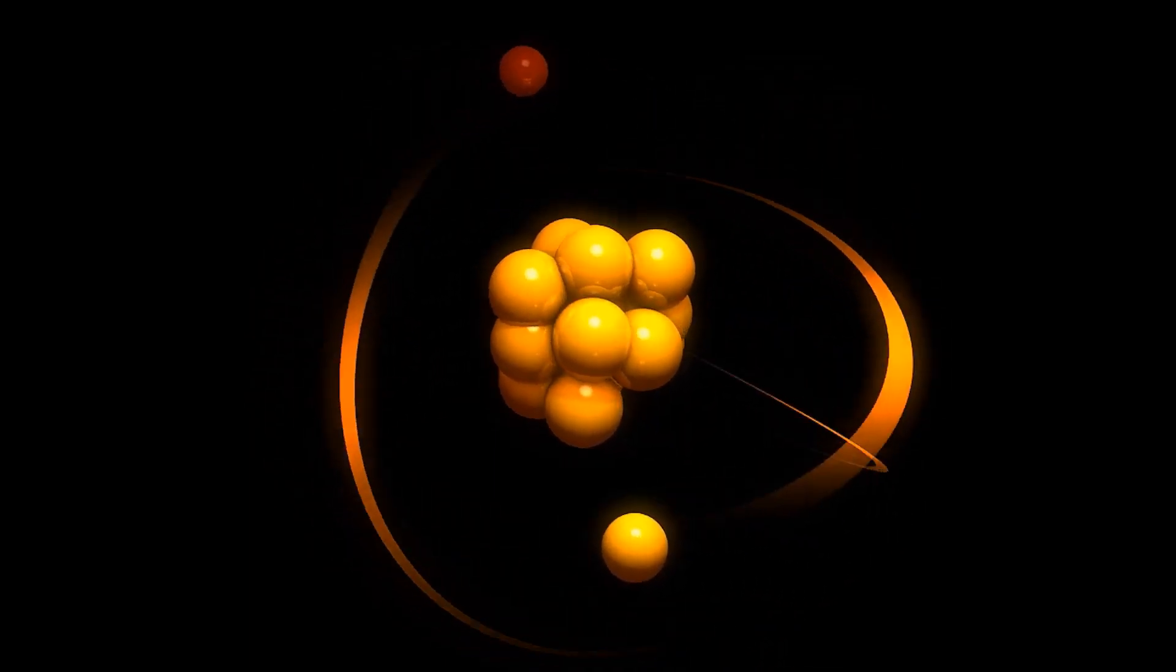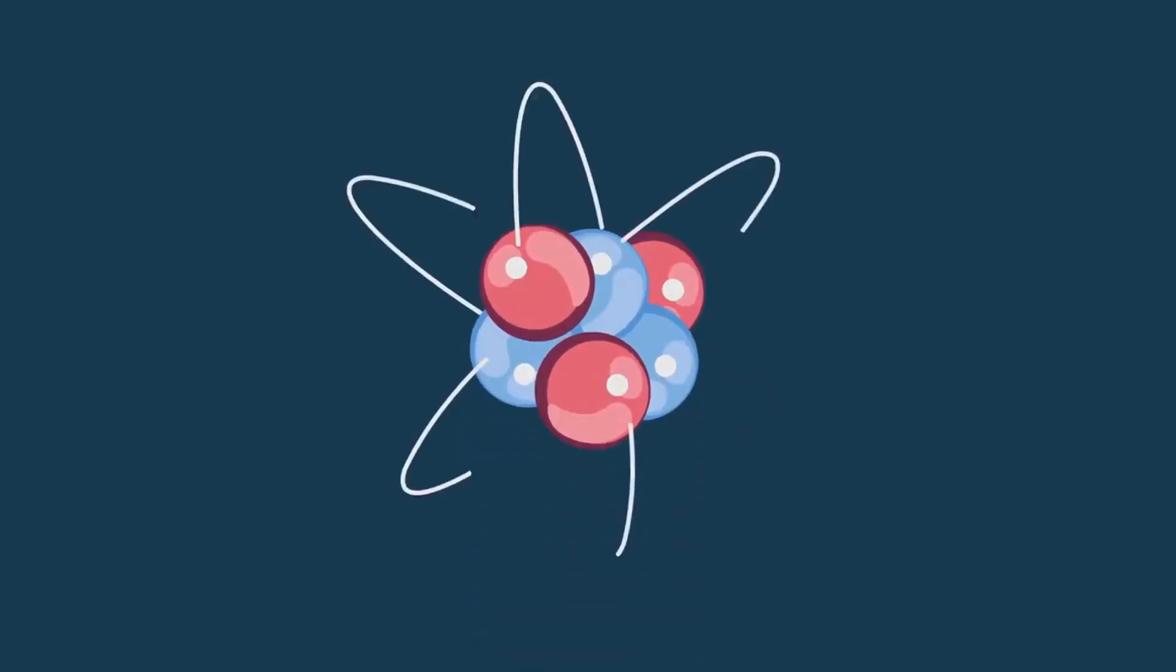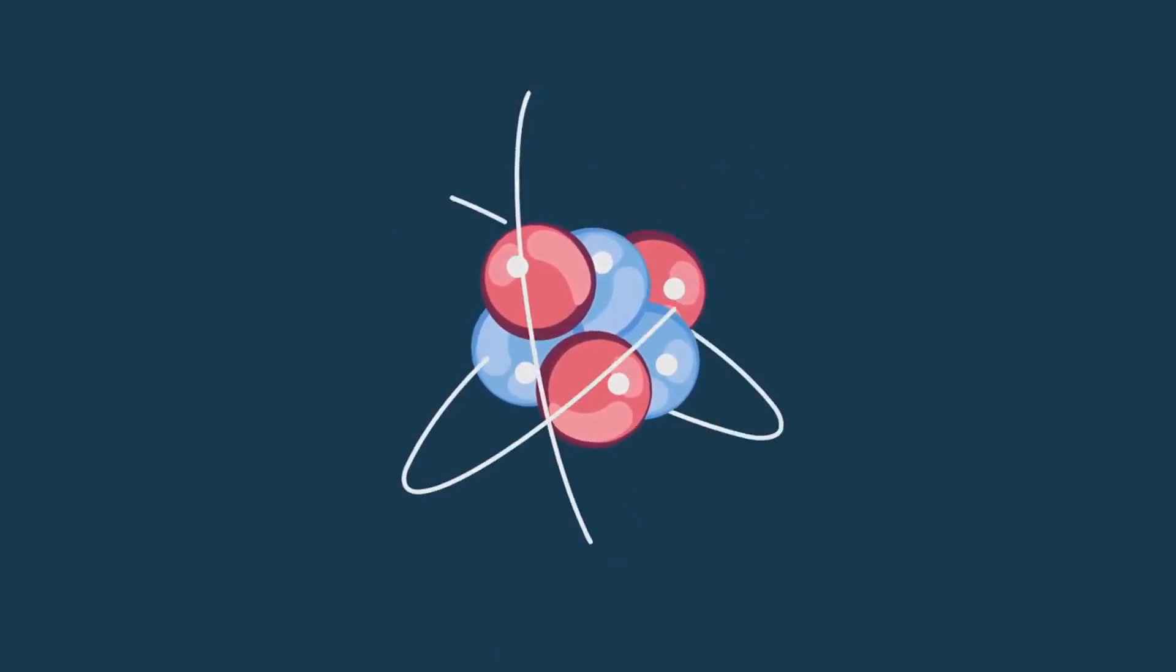Imagine an atom as a miniature solar system. At the heart of this system is the nucleus, which houses protons and neutrons.